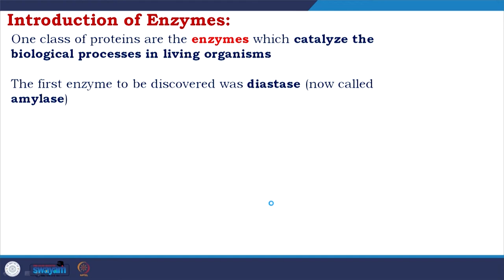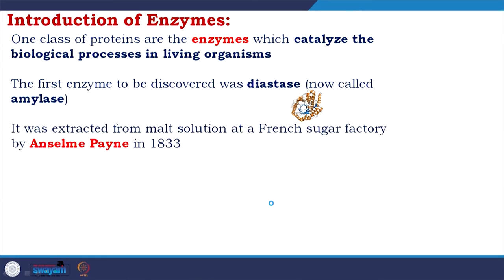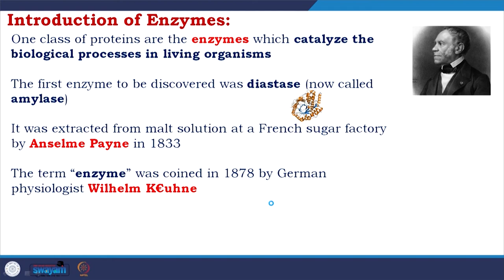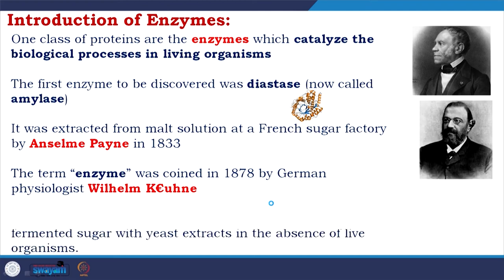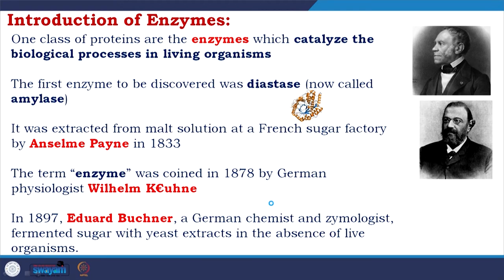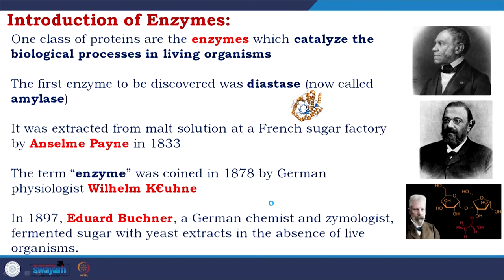One class of proteins — enzymes — catalyze the biological processes in living organisms. The first enzyme to be discovered was diastase, now known as amylase, still an industrially relevant protein. It was extracted from malt solution at a French sugar factory by Anselm Payen in 1833. The term 'enzyme' was coined in 1878 by German physiologist Wilhelm Kühne. In 1897, Edward Buchner fermented sugar with yeast extracts in the absence of live organisms, showing that enzymes could work without the presence of a living organism — another breakthrough innovation.